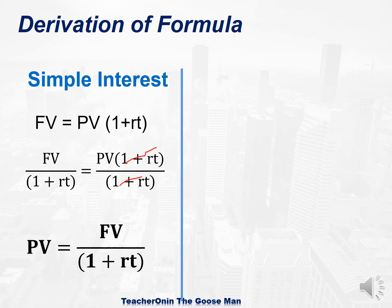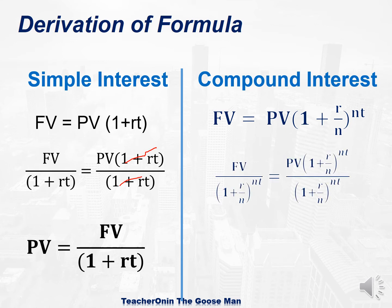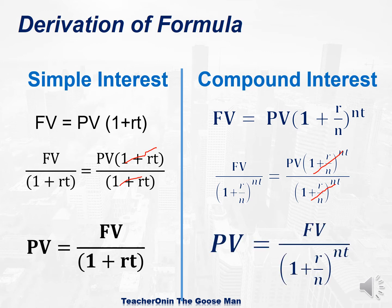On the other hand, recalling the future value of compound interest: future value is equal to present value times 1 plus r over n raised to nt. If I divide both sides by the expression 1 plus r over n raised to nt, and factor out on the right side, I have present value under compound interest is equal to future value divided by 1 plus r over n raised to nt.